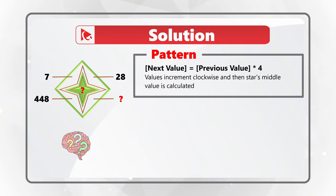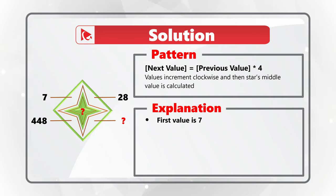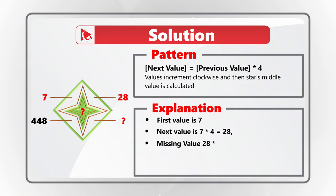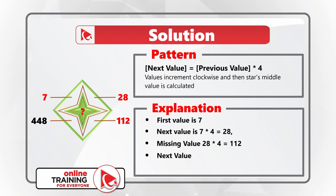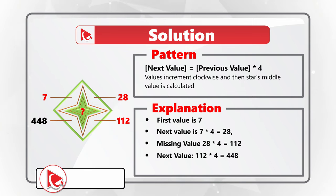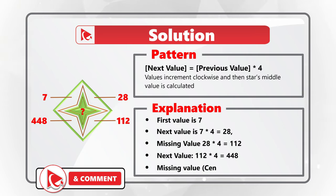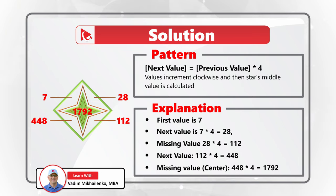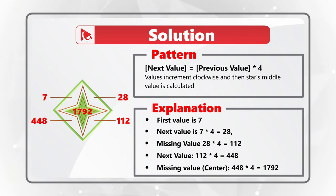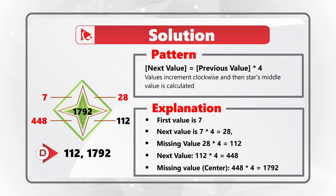Let's use the formula to calculate the missing value. The first value at 11 o'clock is 7. The next value is 28, which is calculated as 7 multiplied by 4. Then we come to the first missing value at 5 o'clock, and that missing value is calculated as 28 multiplied by 4, which equals 112. Next value at 8 o'clock is 112 multiplied by 4, which equals 448. And then the missing value in the center of the star is 448 multiplied by 4, which equals 1792. So the correct answer here is Choice D: 112 and 1792.